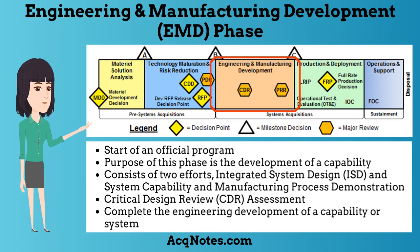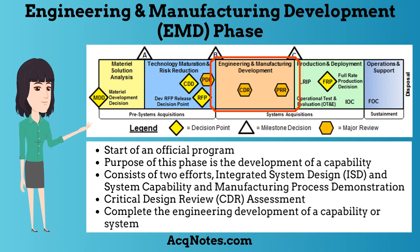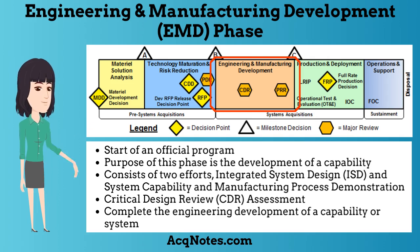The third phase is the engineering and manufacturing development phase, or what I call the EMD phase. Phase EMD is the start of an official program. The purpose of this phase is the development of a capability. This phase starts after a Milestone B review and consists of two efforts: integrated system design and system capability and manufacturing process demonstration. It also contains a critical design review assessment at the conclusion of the integrated system design effort. The goal of this phase is to complete the engineering development of a capability or system and proceed into production and deployment.